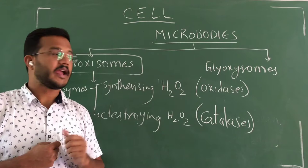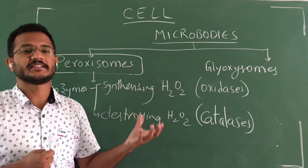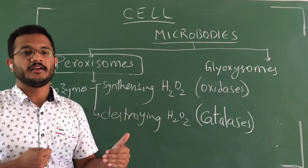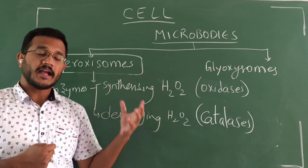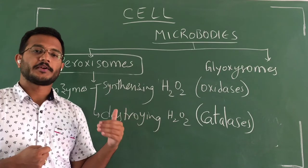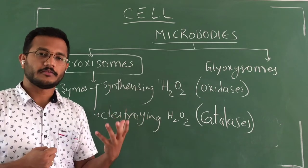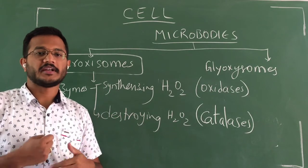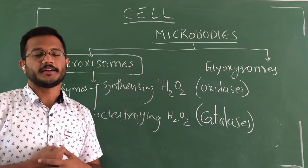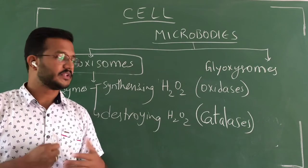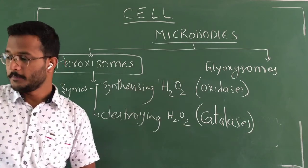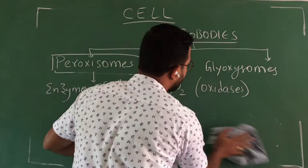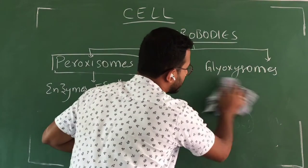So this is the function of peroxisomes. They are present in the photosynthetic cells of plants and in animal cells, particularly the cells of liver, brain, kidneys, and small intestine. This is about peroxisomes. Now moving to glyoxysomes.